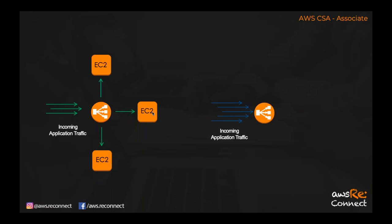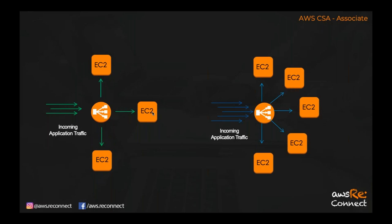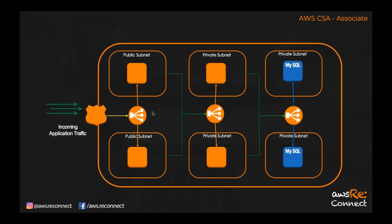Now here is an overview architecture. From the internet, your application requests like example.com go to Route 53. In Route 53 you've configured that whatever requests come to the example.com domain should go to the ELB. Since internet requests come directly to this ELB, this is called an internet-facing ELB. Whatever requests come to this ELB, it will send traffic to the EC2 instances equally — three requests distributed to three EC2 instances one by one.